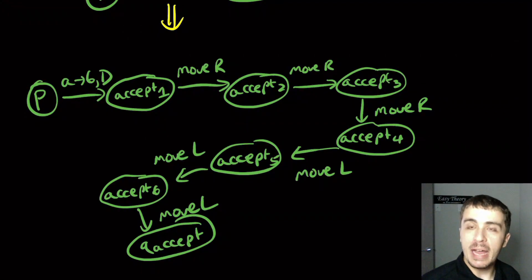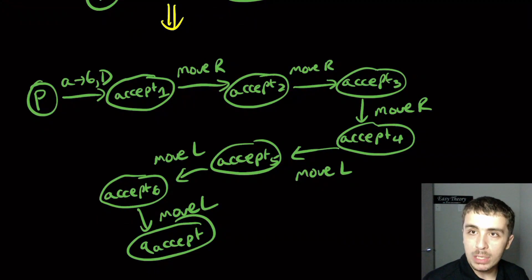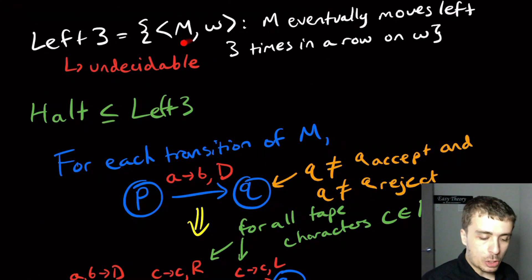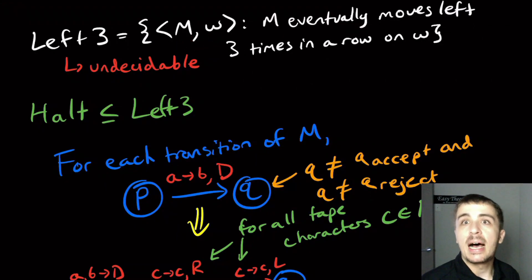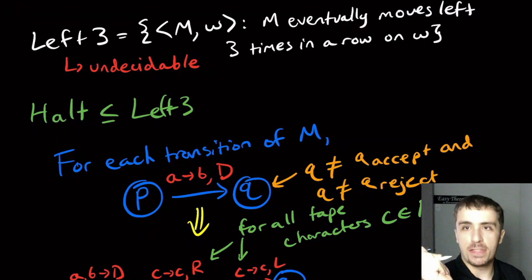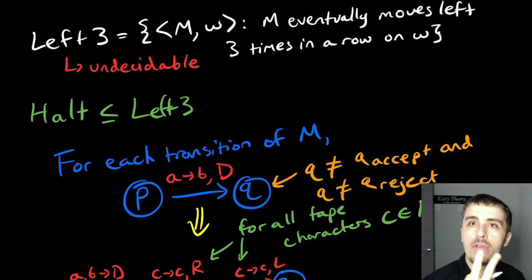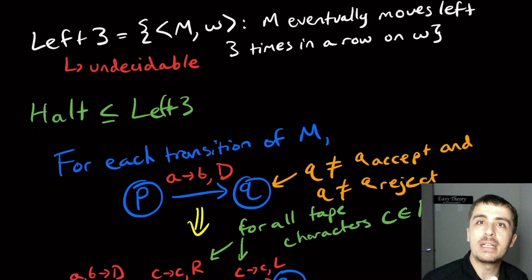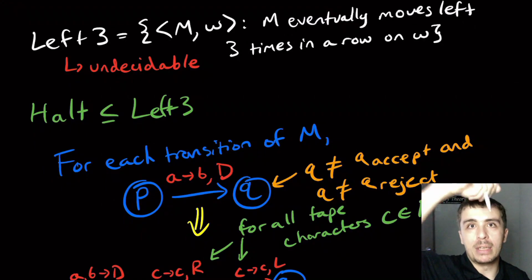That completes the proof that LEFT3 is undecidable: if it were decidable, we could determine for any Turing machine and input W whether that machine halted, which we know is undecidable. So there's a fine line between moving left once and moving left three times. Moving left twice in a row may be an interesting open question, but moving left three times in a row is undecidable.